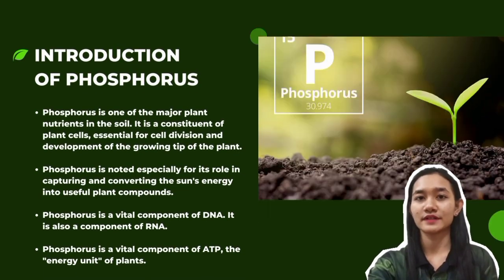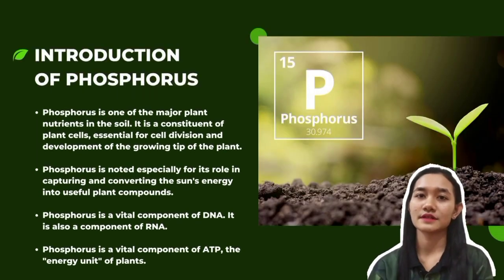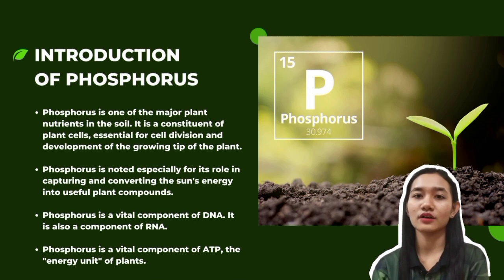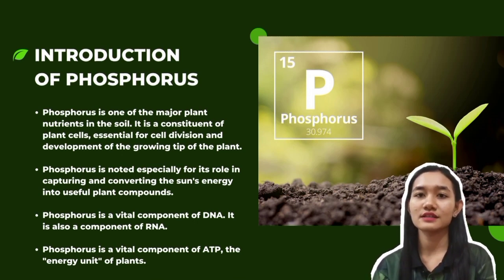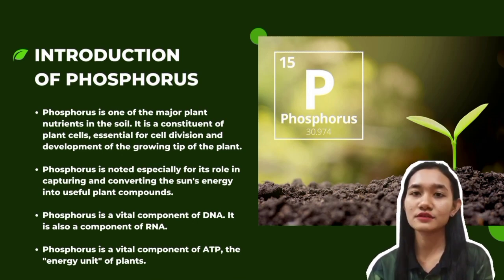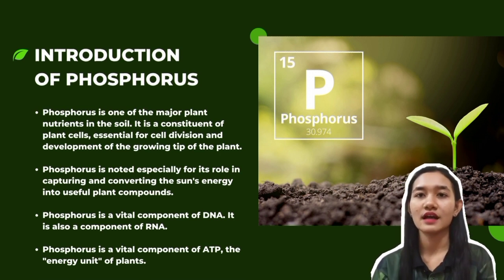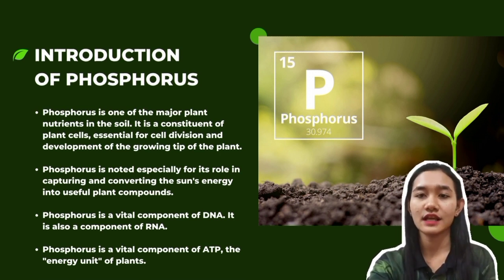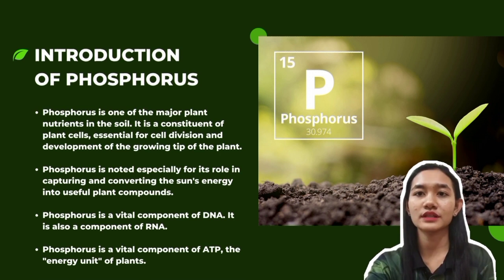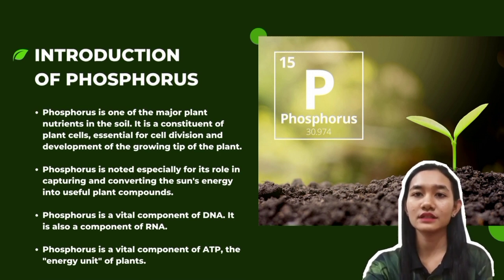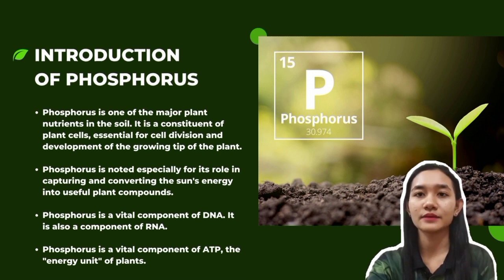Phosphorus is one of the major plant nutrients in the soil. It is a constituent of plant cells, essential for cell division and development of the growing tips of the plant. For this reason, it is vital for seedlings and young plants.